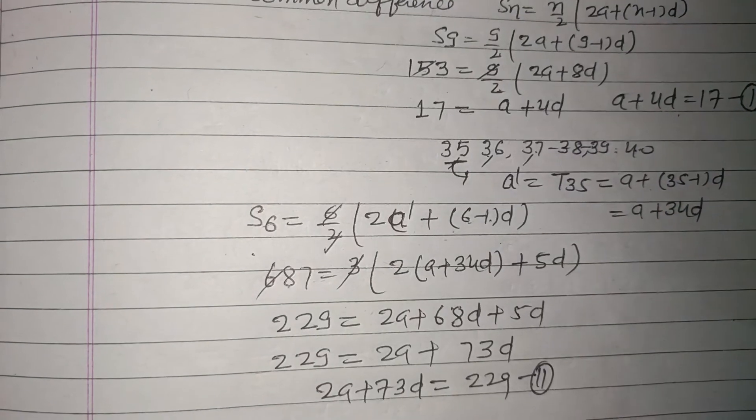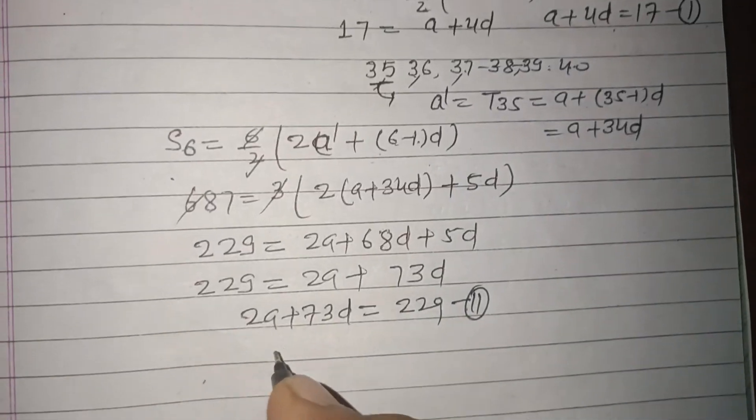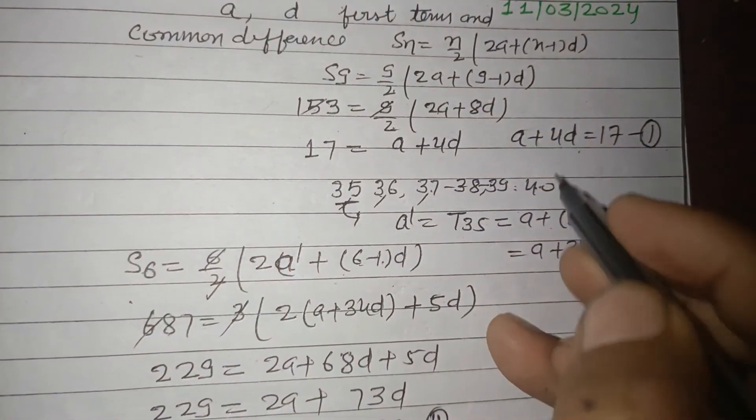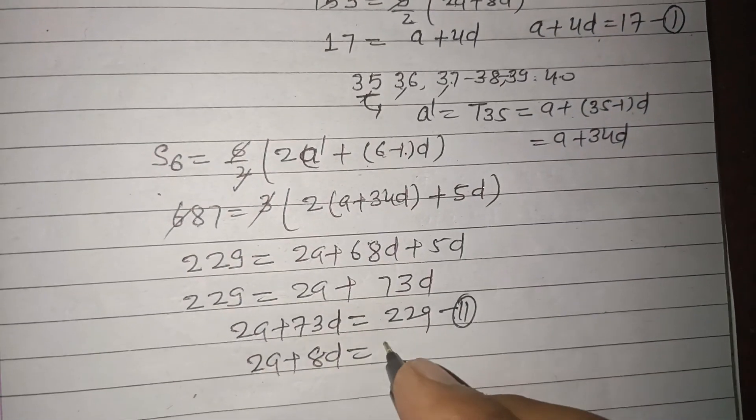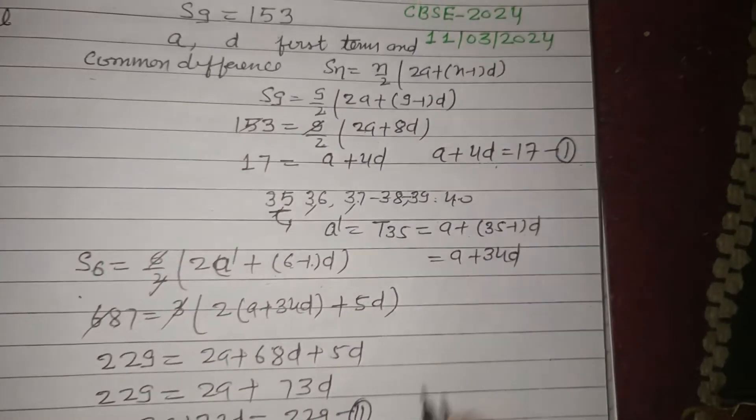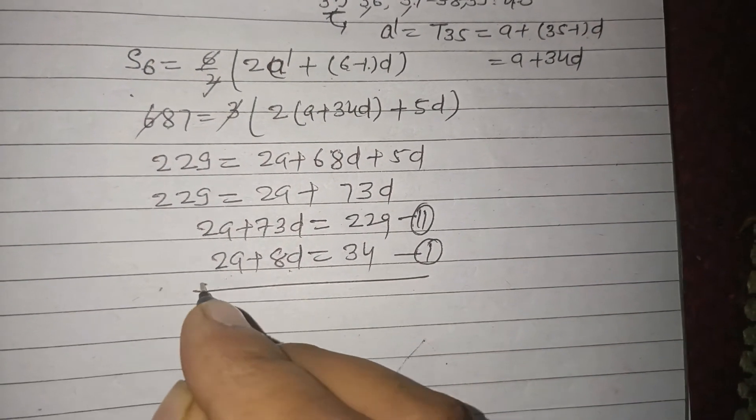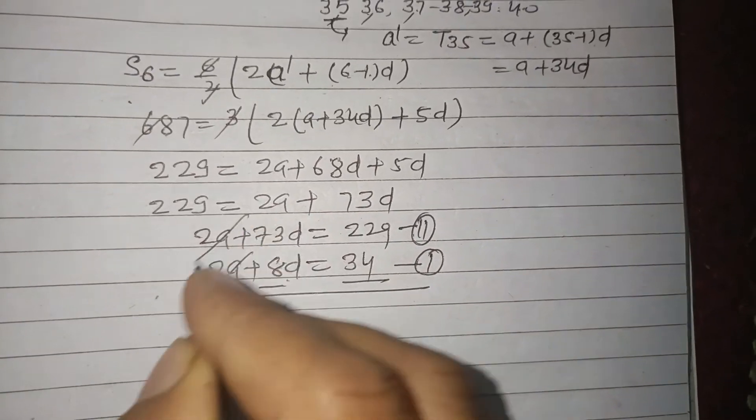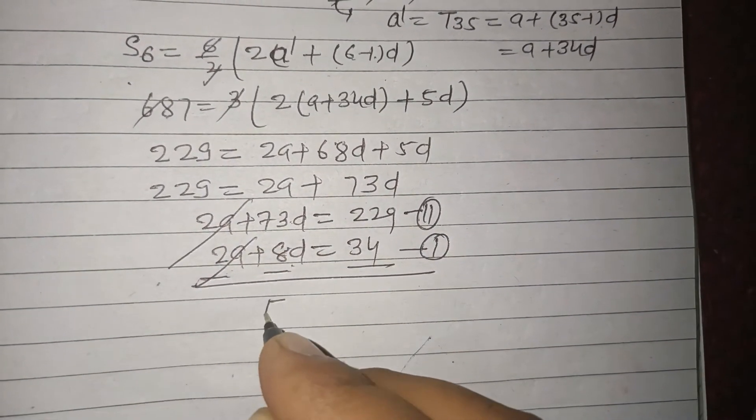Now taking first, A plus 4D equal to 17. So multiplying this by 2, so 2A plus 8D equal to 34. This is our first equation. Then we multiplied both sides by 2, we got 2A plus 8D equal to 34. Now subtracting this, 2A cancels, 73 minus 8, this is 65D.